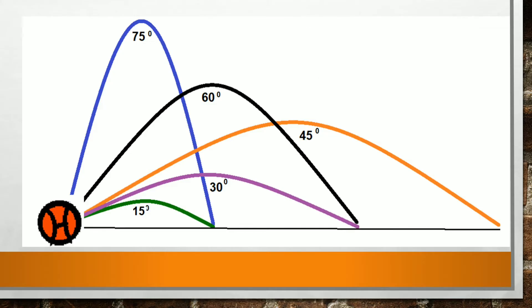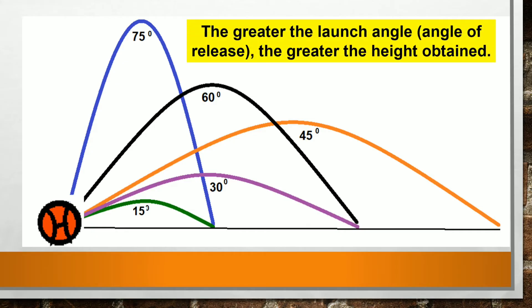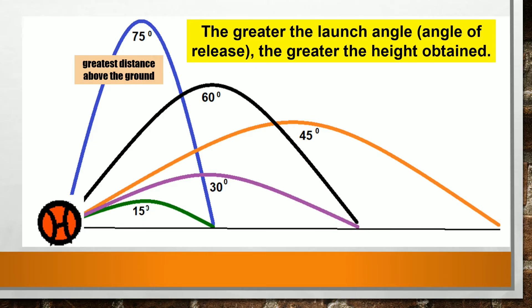From the figure, you can observe that these projectiles attain different heights above the ground. It shows that the higher the launch angle, the greater the height. Given the five angles of release in the figure, the projectile launched at 75 degrees reaches the greatest distance above the ground, while it is least at 15 degrees.